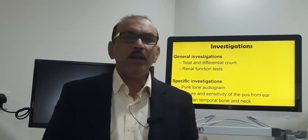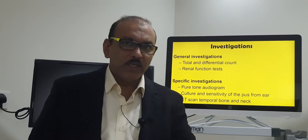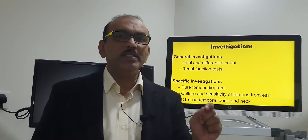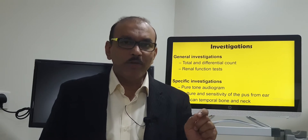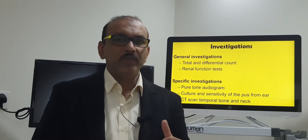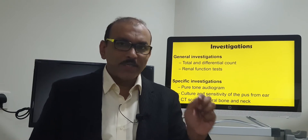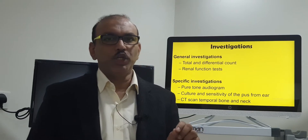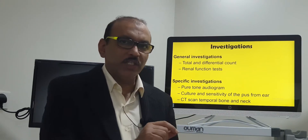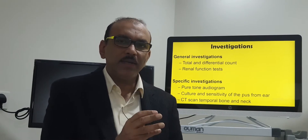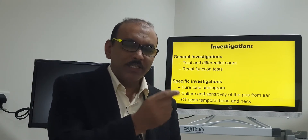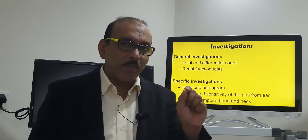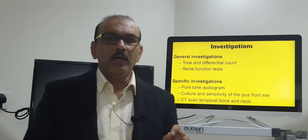These patients need to be admitted and we start investigations: routine blood investigation followed by the investigation of choice, which is a high resolution CT scan with contrast of the head inclusive of the neck. That will show pus formation in the mastoid as well as pus formation in the upper part of the neck. Along with this, we need to do a hearing test and take pus for culture sensitivity, so we can identify which bacteria is involved and which antibiotic should be given against that particular bacteria.